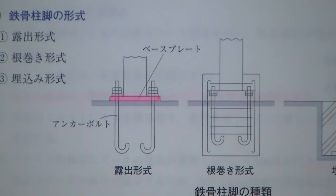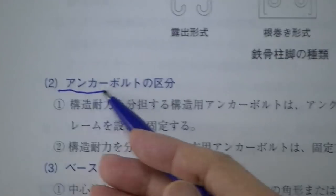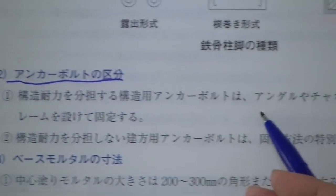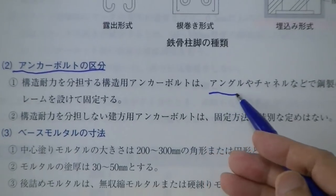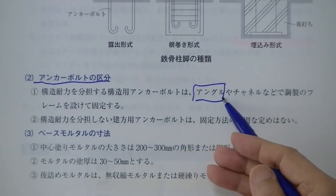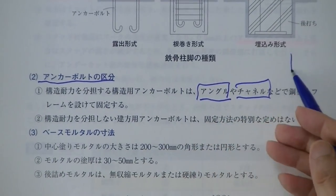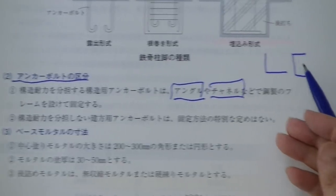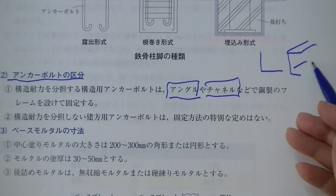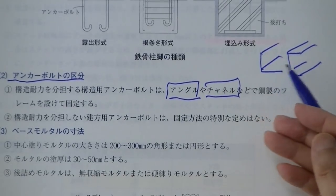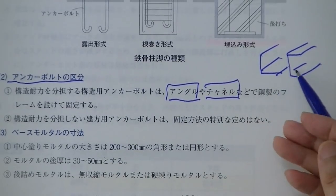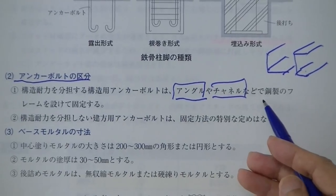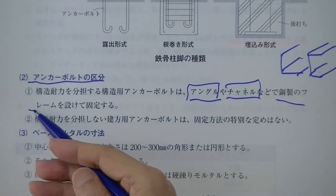鉄骨の基礎部分について。一番下のコンクリートの上に置くのはベースプレートといい、アンカーボルトで止めます。アンカーフレームはアングル（直角形鋼）やチャンネル（C型鋼）を組み合わせて作った台のことをいいます。これを構成フレームといいます。